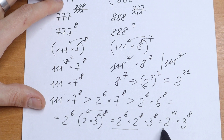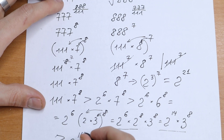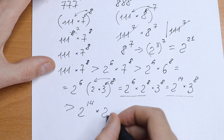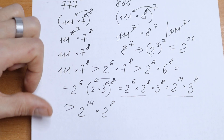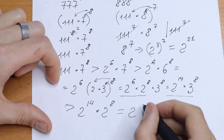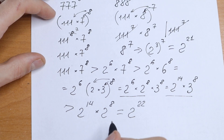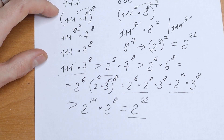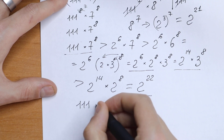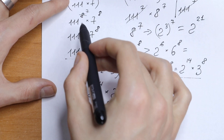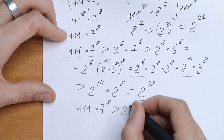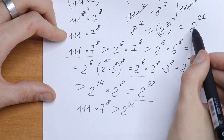This is greater than 2 to the 14th times 2 to the 8th — replacing 3 to the 8th with 2 to the 8th since 3 > 2. That gives us 2 to the power 22. So our original left-side number, 111 times 7 to the 8th power, is greater than 2 to the power 22, which is greater than 2 to the power 21.